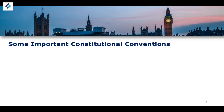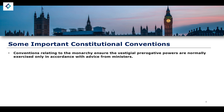There are some constitutional conventions worth highlighting as examples. Conventions relating to the monarchy ensure that vestigial prerogative powers are normally exercised in accordance with advice from ministers. For example, the convention of royal assent: when a bill is to be passed into law, it must receive royal assent. This is technically a constitutional convention with no strict legal authority behind it. It is also a general rule of thumb that the monarch accepts any bill being passed — a monarch cannot reject or veto a piece of legislation. Again, this is a constitutional convention, not a legally binding authority.